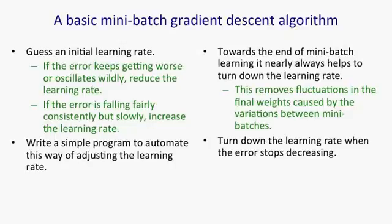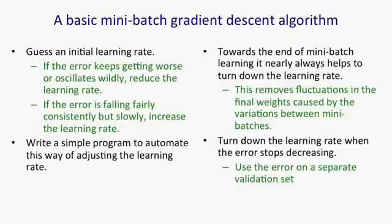And a good criterion for saying the error stopped decreasing is to use the error on a separate validation set. That is, it's a bunch of examples that you are not using for training and also they're not going to be used for your final test.